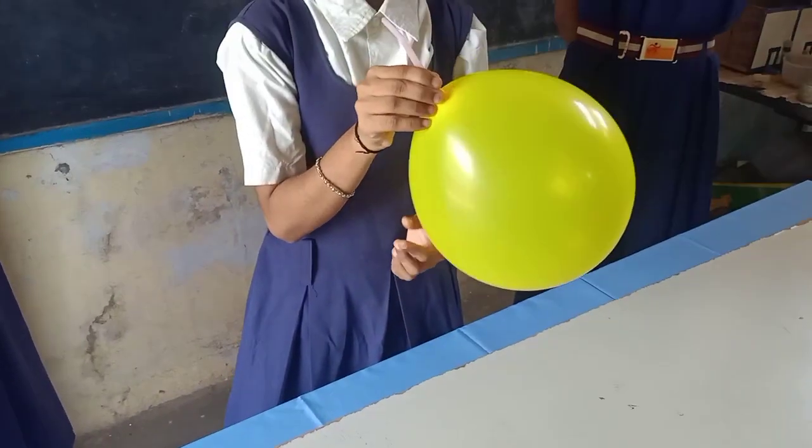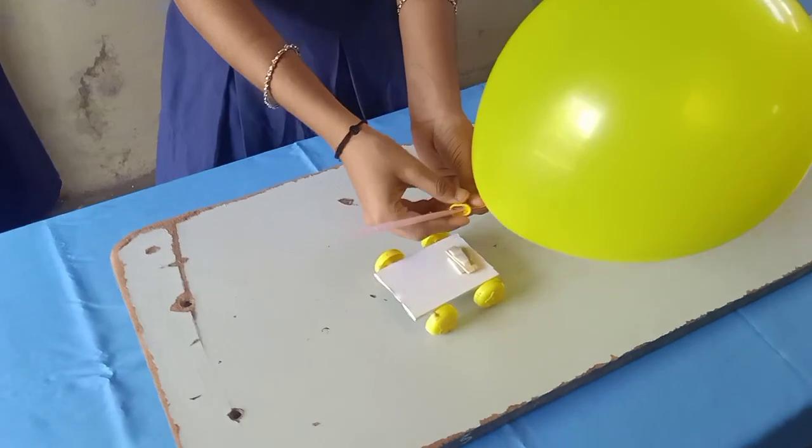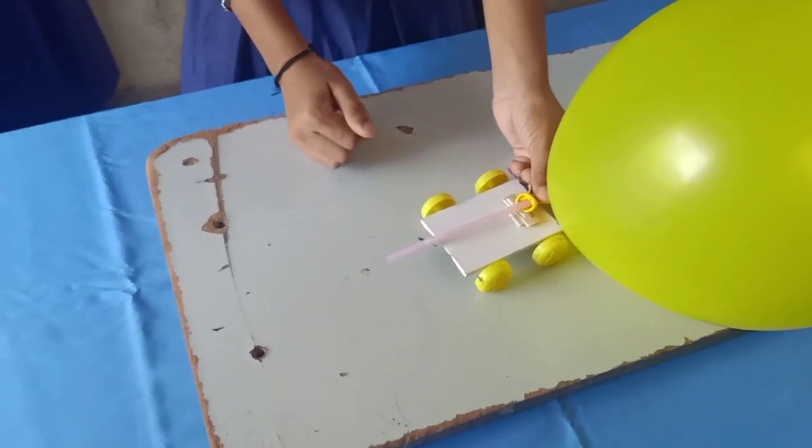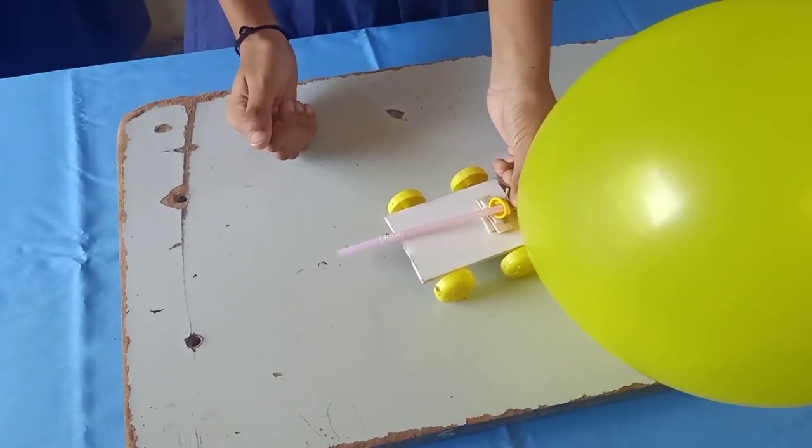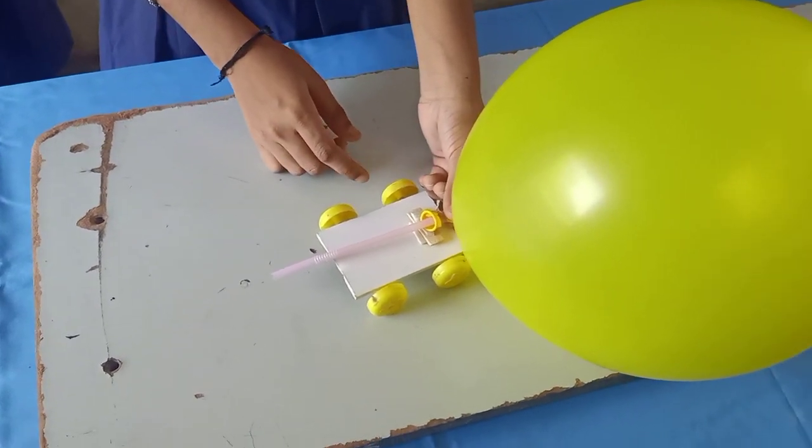After blowing the air, we have to put on this. The air is moving on back side and the trolley is moving in front side.